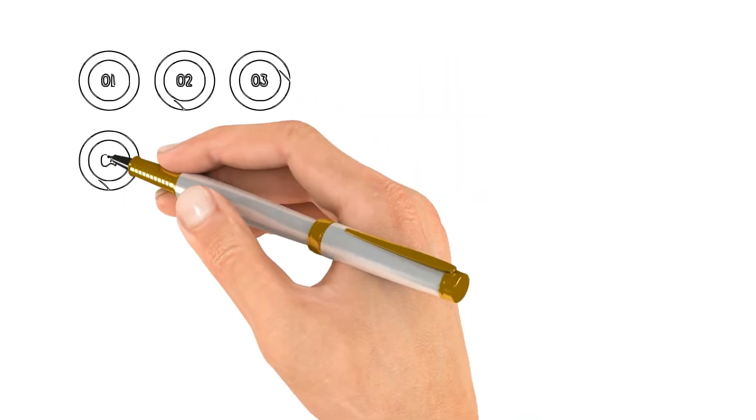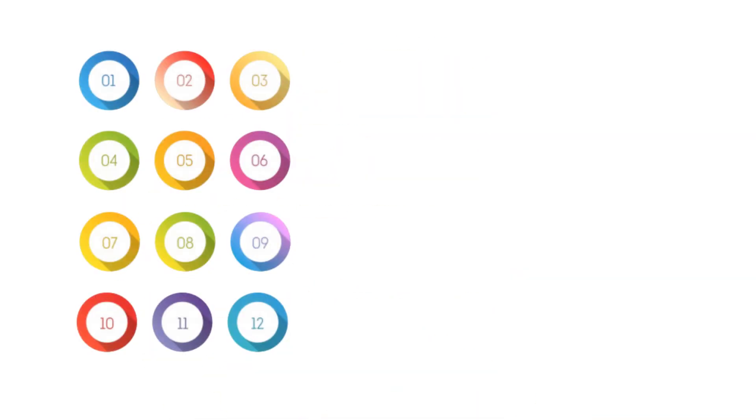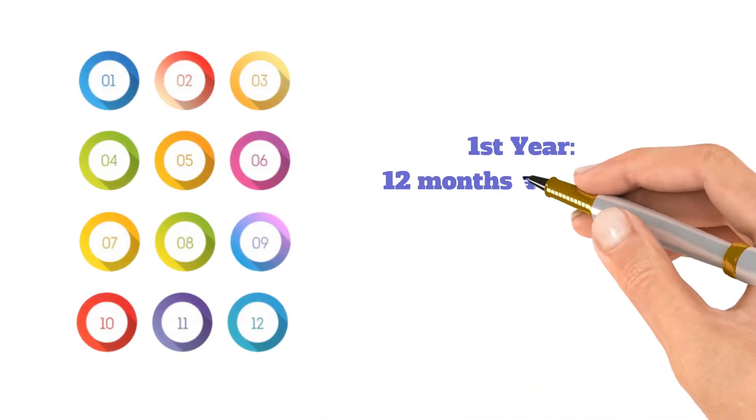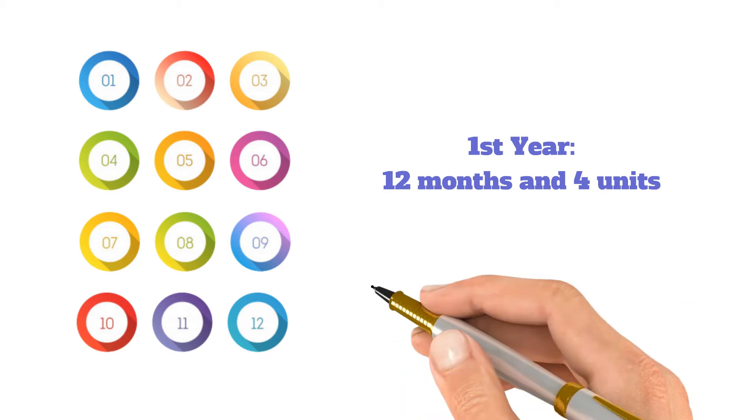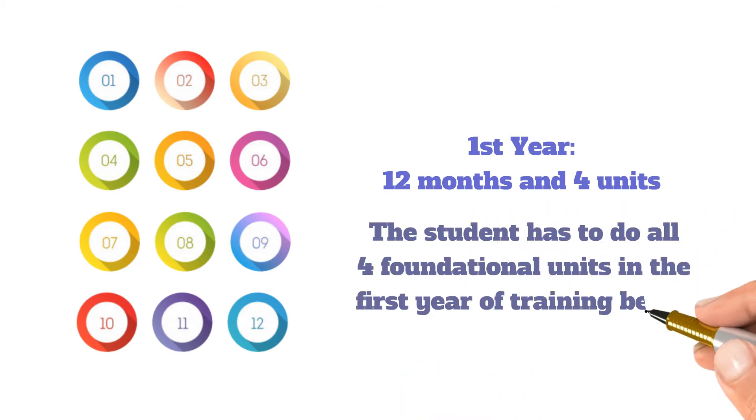Each year program and unit is progressive. The first year program is 12 months and has four units that rotate seasonally. The student has to do all four foundational units in their first year of training before beginning year two.